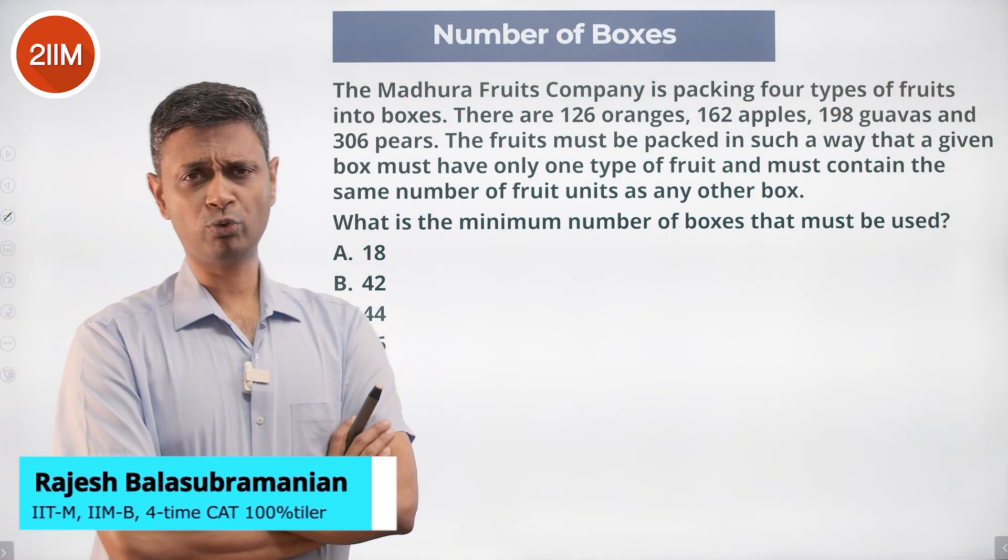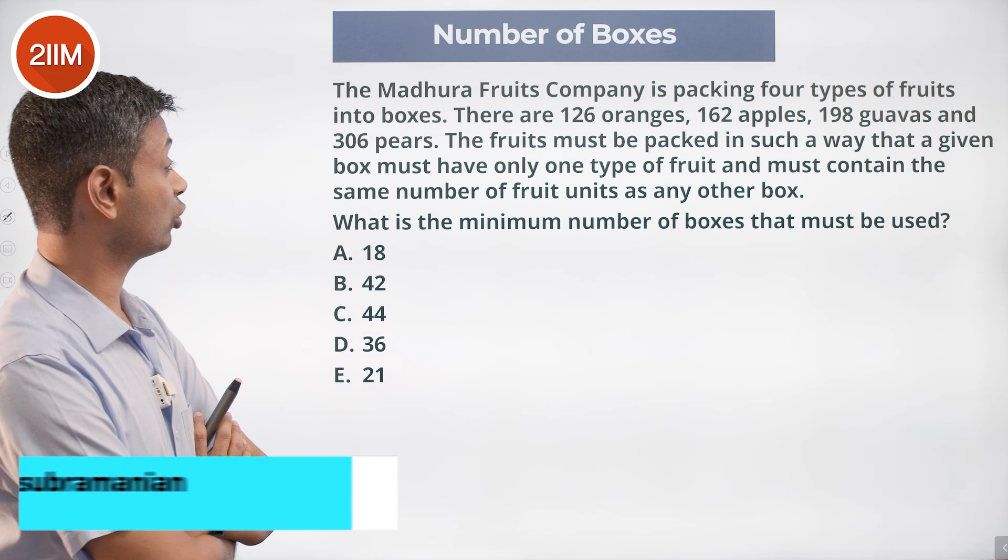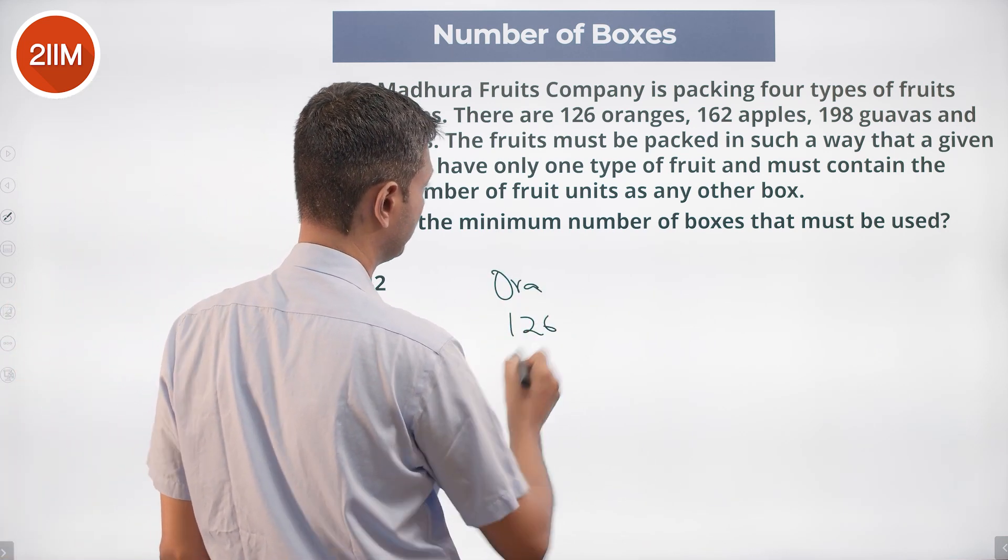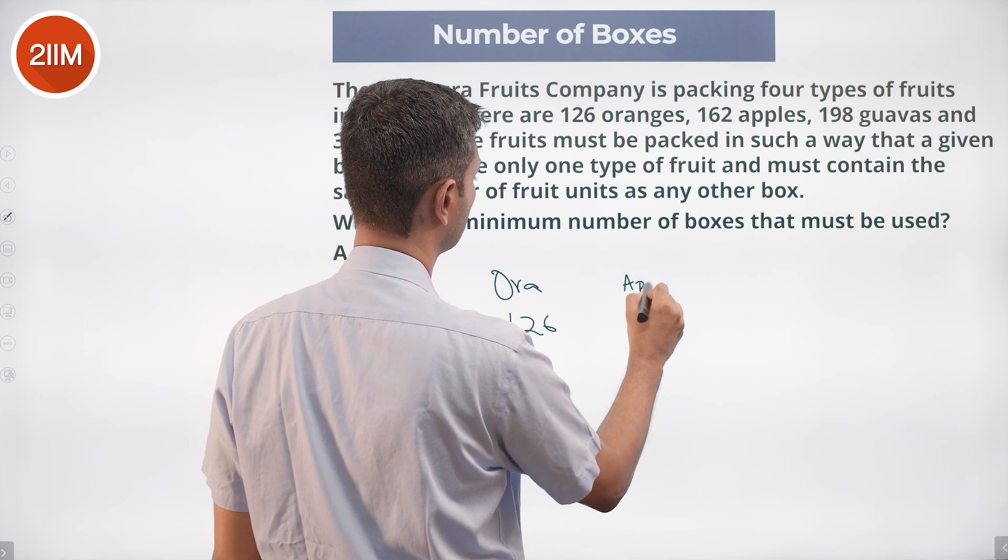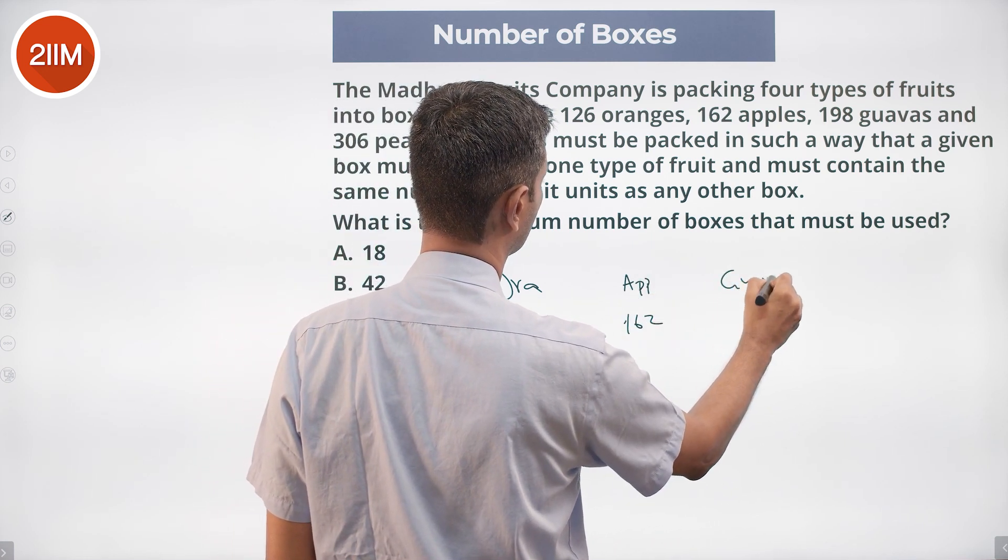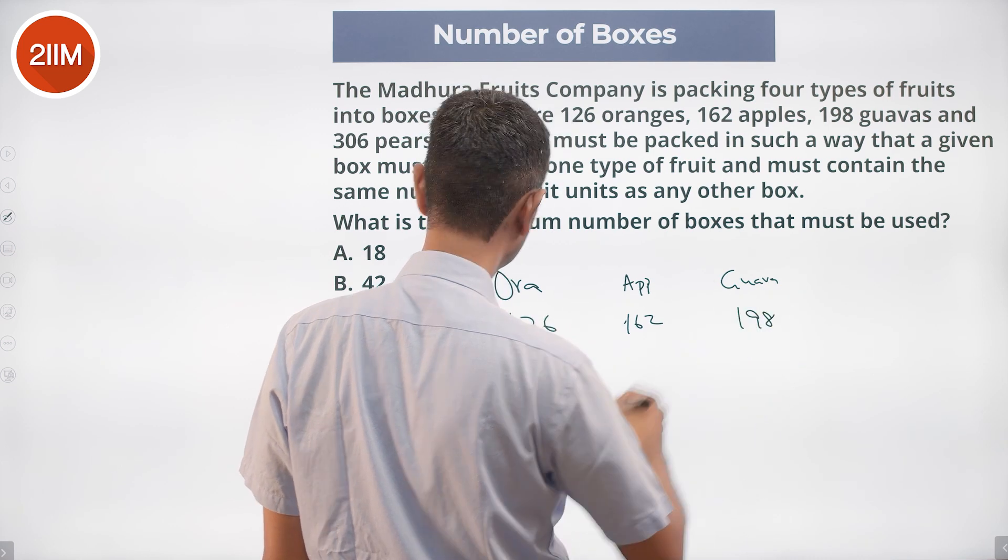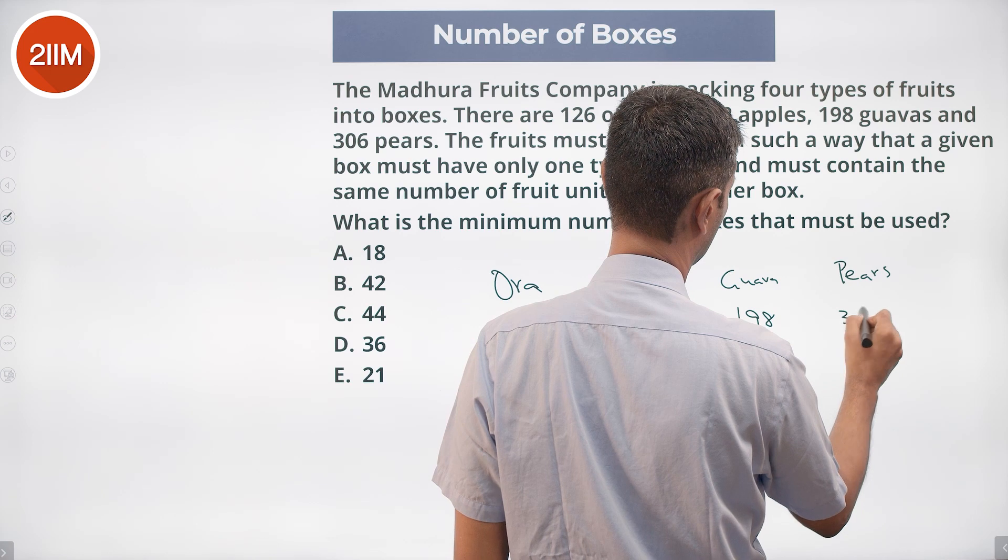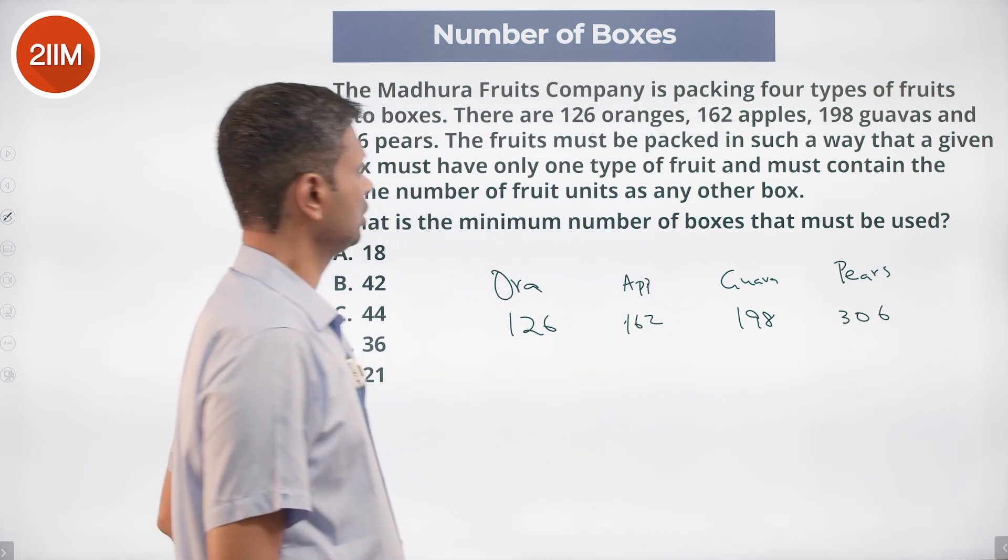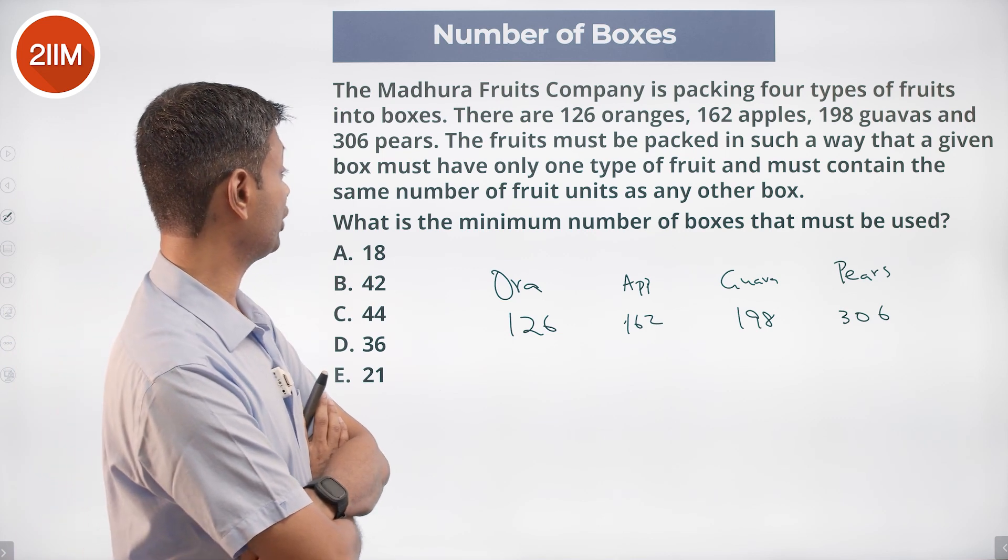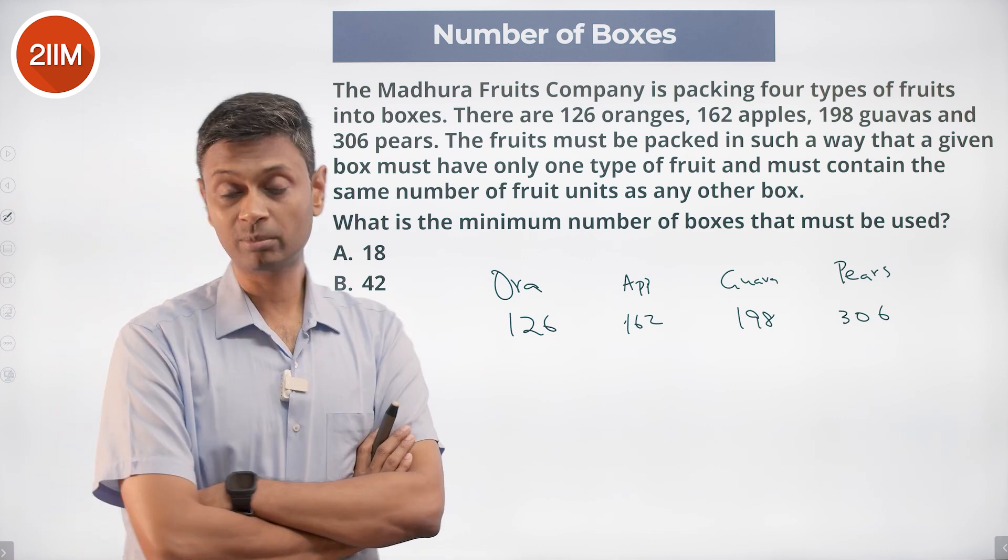The Madhura Fruits Company is packing four types of fruits: 126 oranges, 162 apples, 198 guavas, and 306 pears. The fruits must be packed in such a way that a given box must have only one type of fruit and must contain the same number of fruit units as any other box.